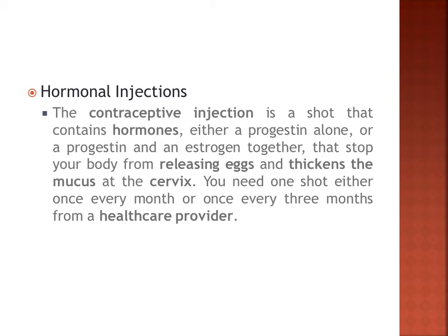Next we have hormonal injections. The contraceptive injection is a shot that contains hormones — either progestin alone or progestin and estrogen together — that stops your body from releasing eggs and thickens the mucus at the cervix. You need one shot either once every month or once every three months, administered by a healthcare provider. A prescription is required.